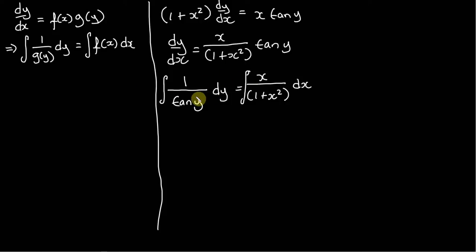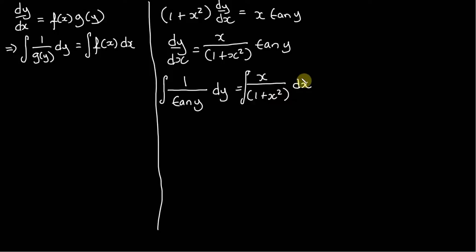This is separation of variables. On the left-hand side we need to integrate 1/tan(y) with respect to y — because when separating variables you want your y terms with dy and your x terms with dx. On the right-hand side we integrate x/(1+x²) with respect to x. Now, integrating 1/tan(y) is not really that nice on its own.